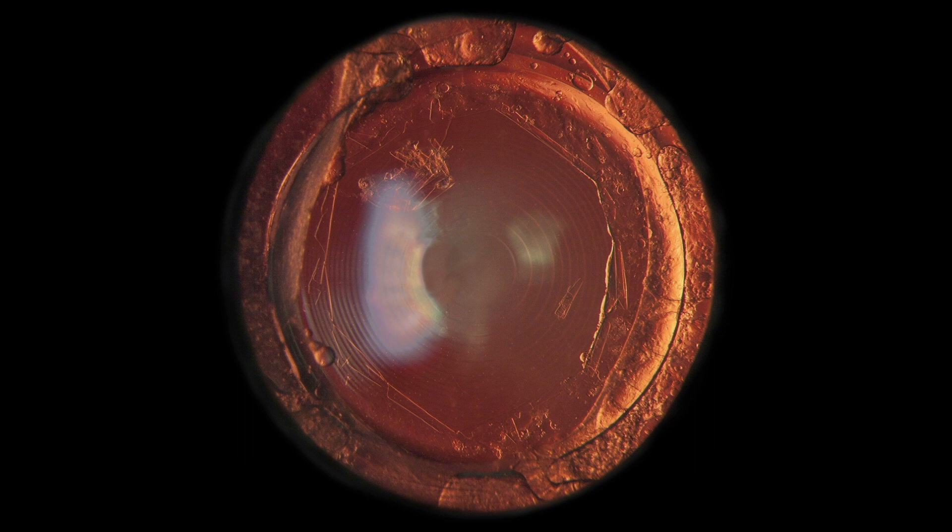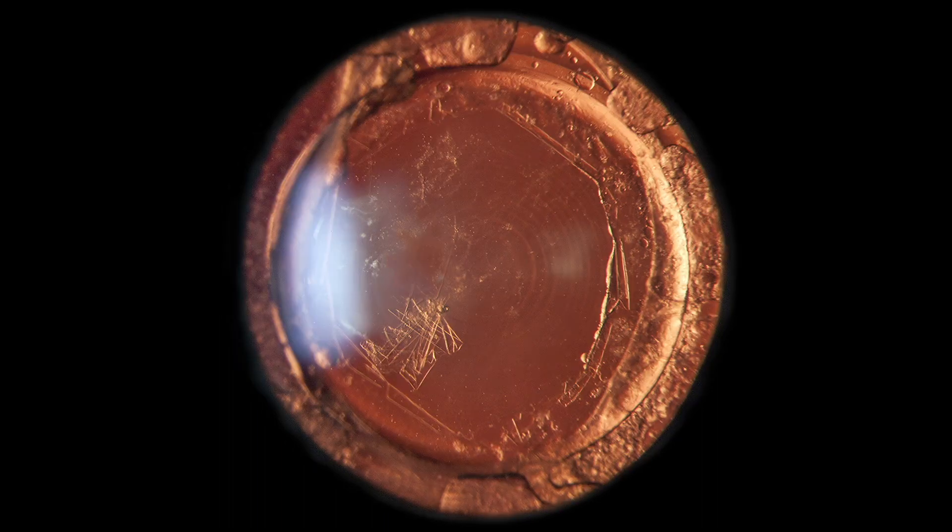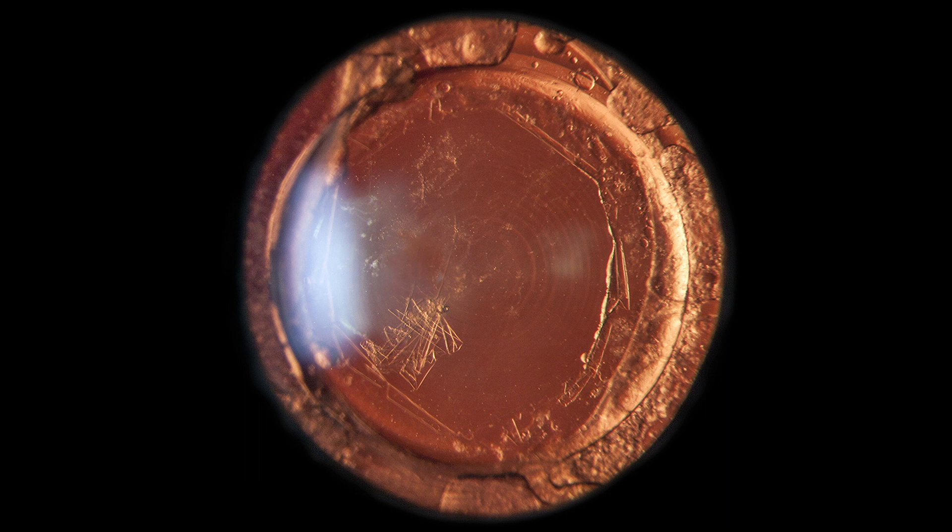The freed capsule lobe is left to float in the vitreous body. It is not uncommon for this to remain in the area of the optical axis, fully oscillating with all eye movements. Fortunately, not all patients will perceive this capsular remnant. However, some will be severely impaired by it, as you can see in the following example.